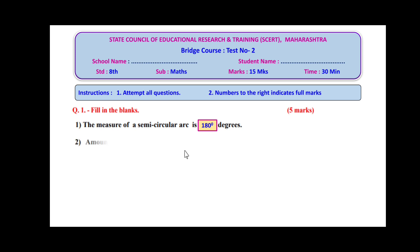Question number two: amount is equal to principal plus ___. We get the amount in simple interest or compound interest. When you add the interest to the principal, you get the amount. So, amount is equal to principal plus interest. This interest may be either simple interest or compound interest depending on which type you are considering.